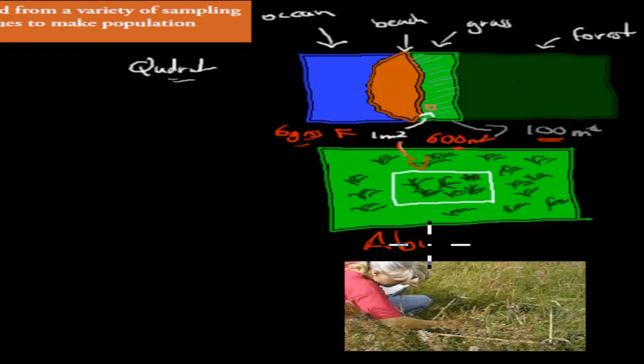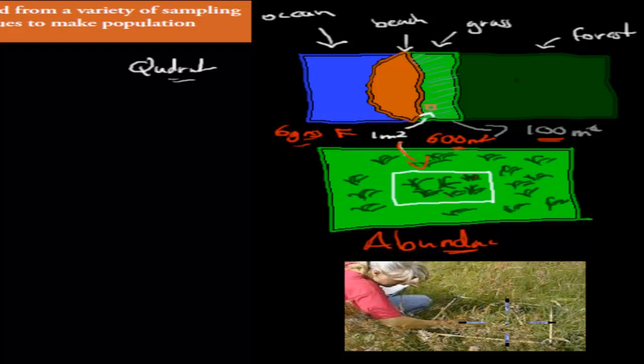Here's an example of someone actually using a quadrant — they place it over an area and count how many grass blades they can find inside it.